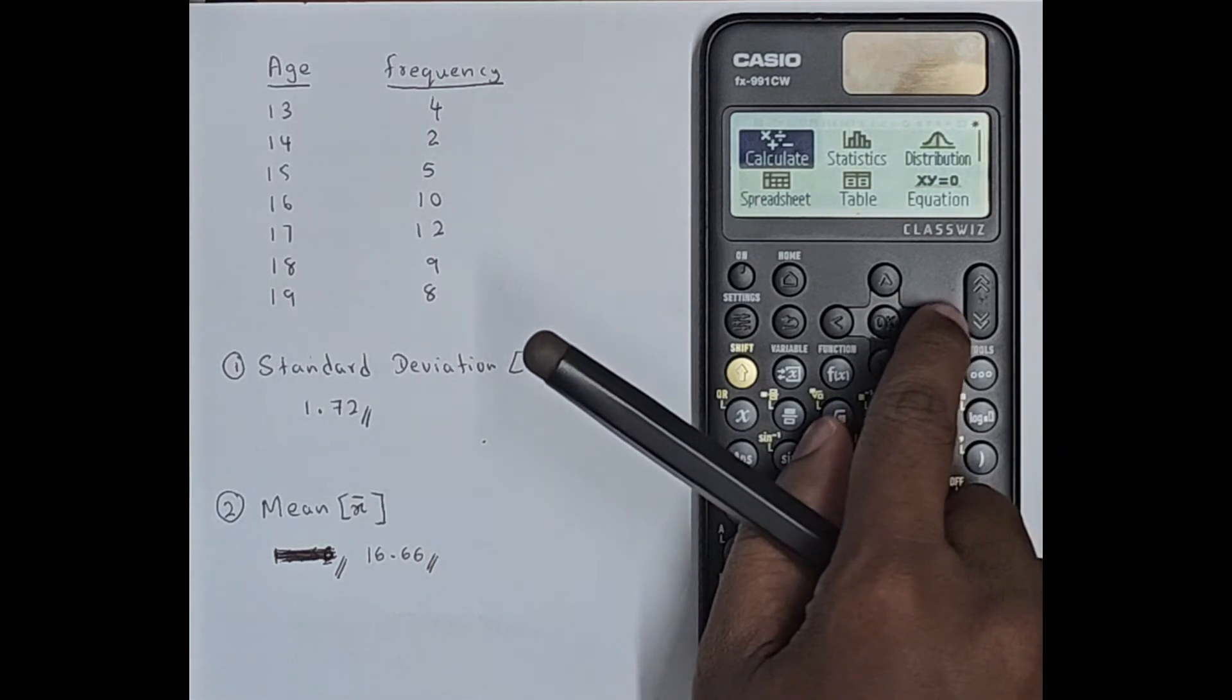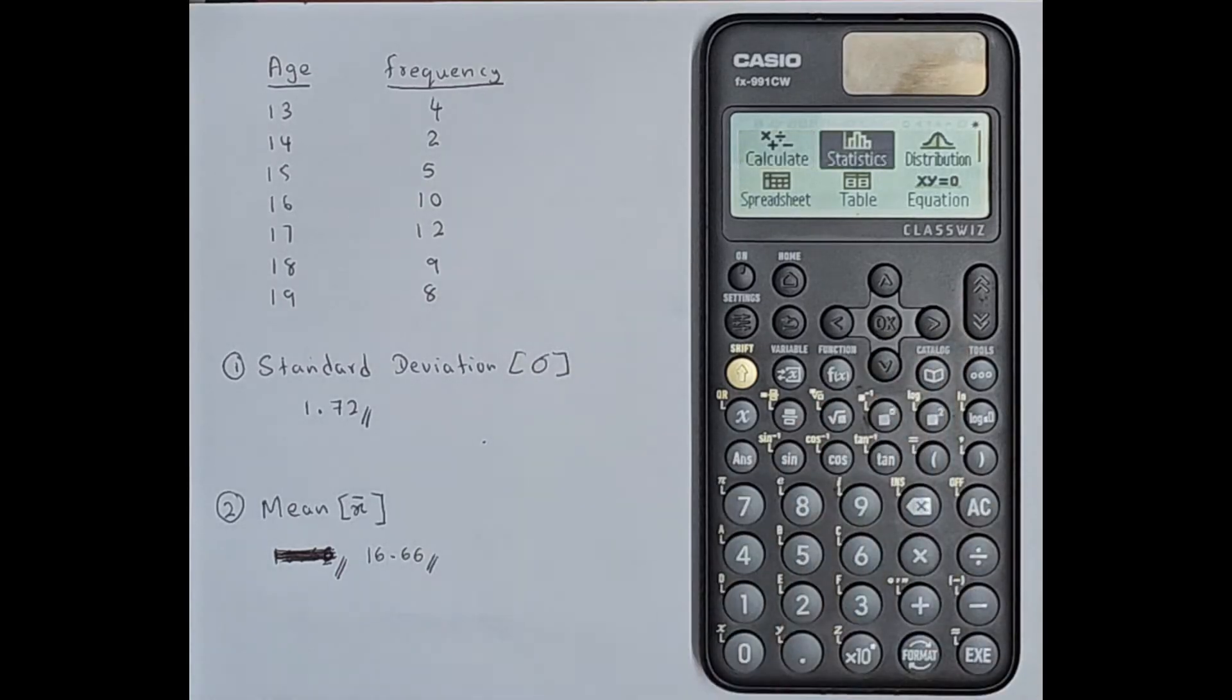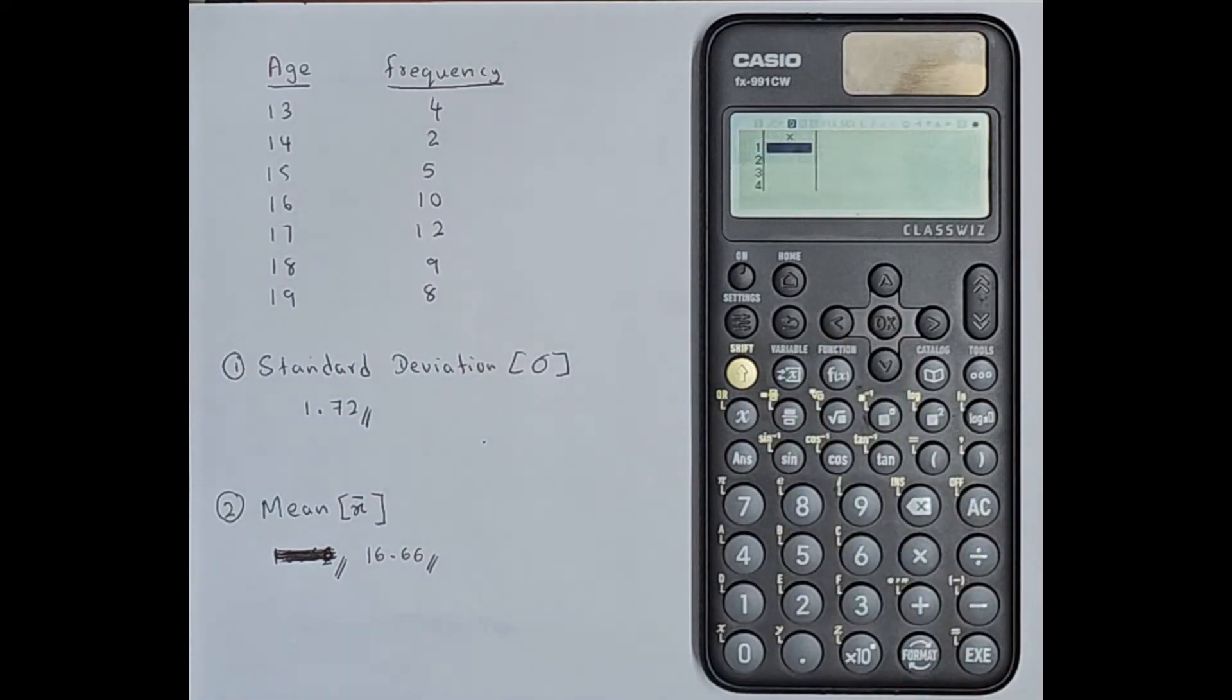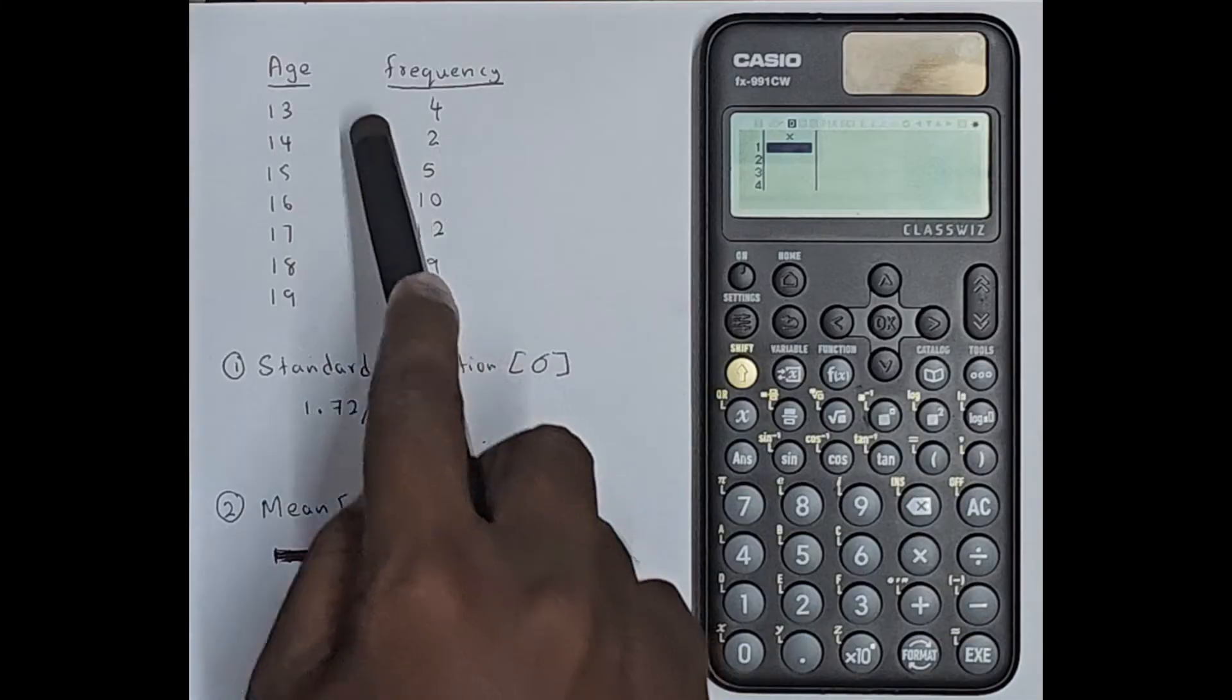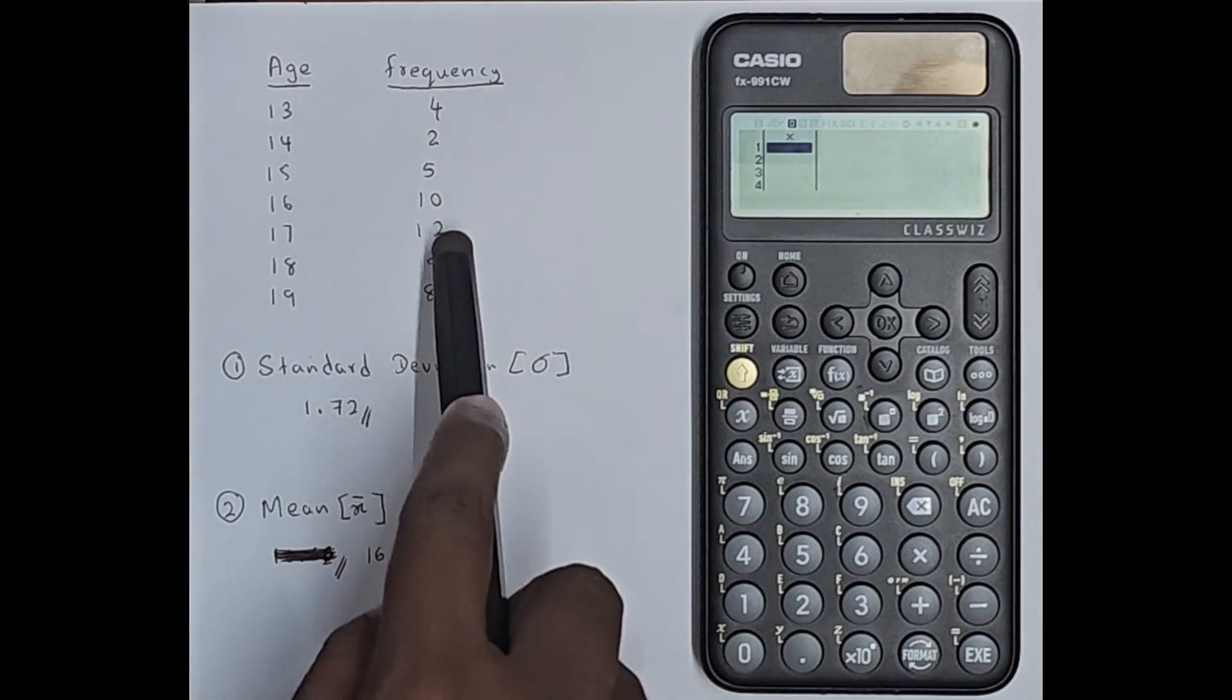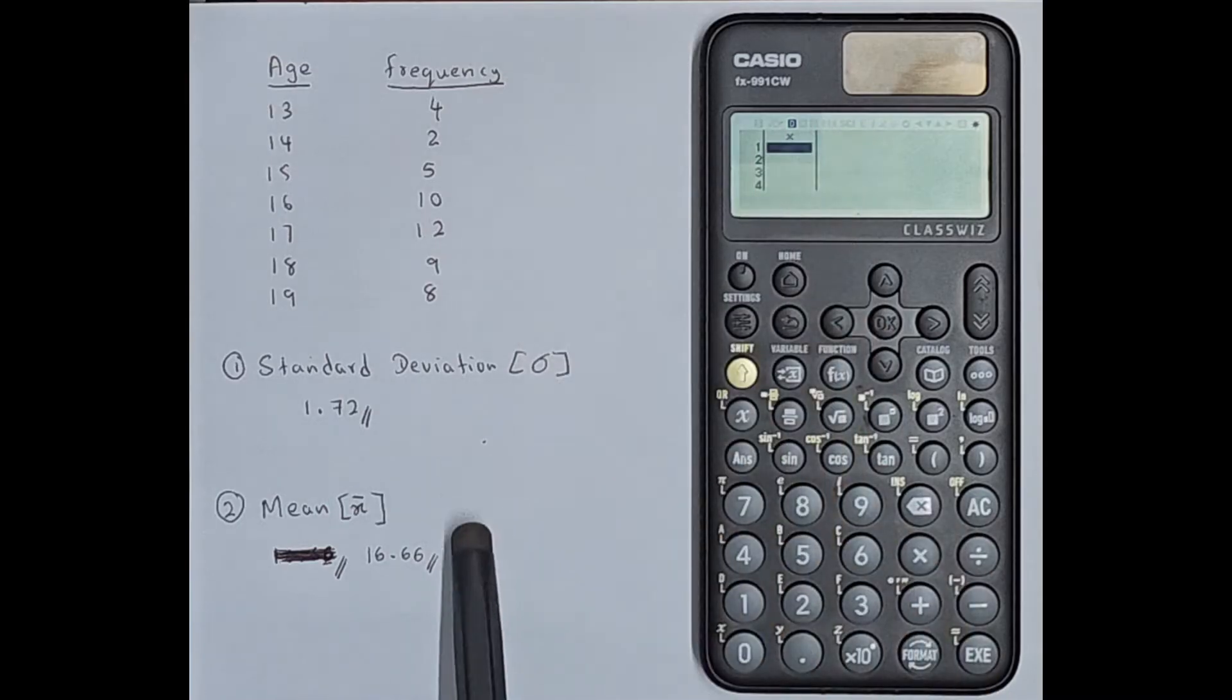Next what you have to do is go to statistics using this arrow key, press OK. Here you have to select one variable. So here you can see you have a column only to enter the x variable values but you don't have a column to enter the frequency values.